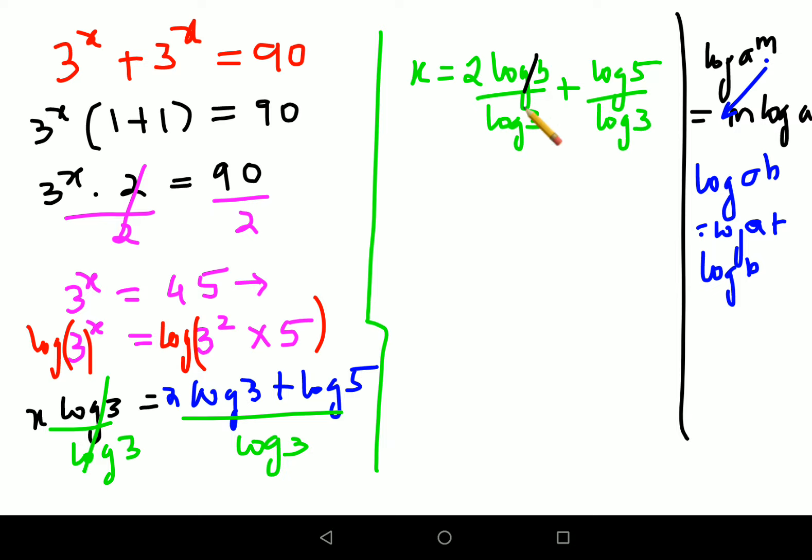So now if you see this is cancelled. So I am left with x equals to 2 plus log 5 upon log 3.